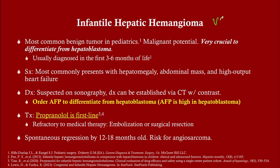Infantile hepatic hemangioma (IHH) is fairly common in infants. The key differential is hepatoblastoma, which is the number one cause of malignant liver tumors in pediatrics. IHH has malignant potential, but it's crucial to rule out hepatoblastoma since they can look similar on imaging. IHH is usually diagnosed in infancy, and can also be diagnosed prenatally on ultrasound. It tends to present with hepatomegaly or a palpable abdominal mass, which are relatively easy to detect in infants.